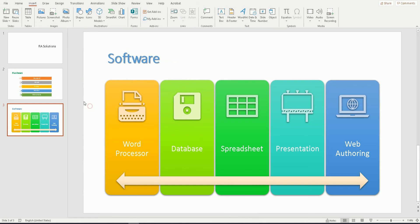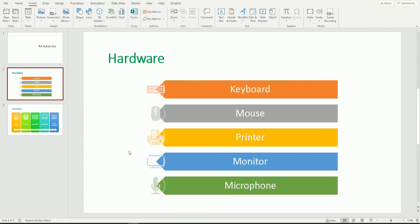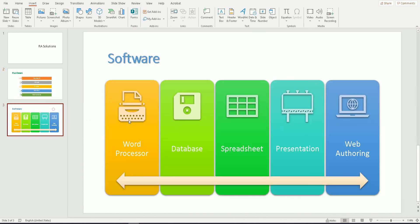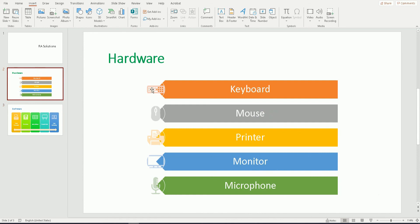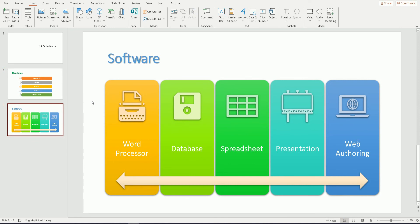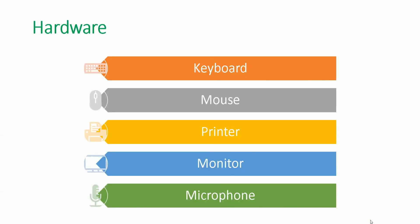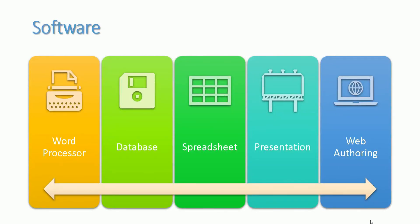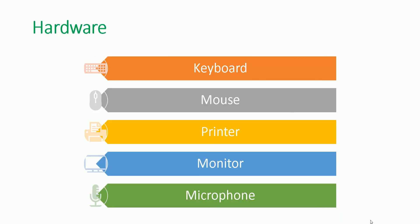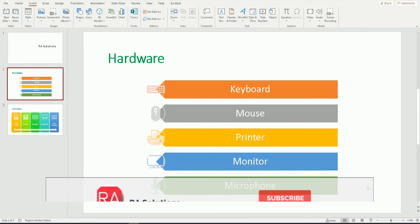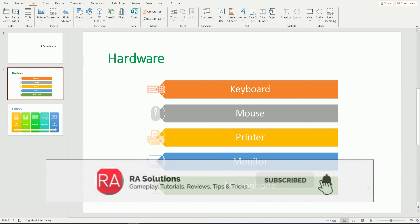So there we have it. This is a quick and easy video showing you how to convert a bullet-pointed list into SmartArt. I've shown you how to do it for two different SmartArt styles and how to add your own specific icons to customize it to your presentation topic. This makes your PowerPoint more engaging, more eye-catching, and helps capture the audience's attention. I hope this video has helped you understand how to convert simple text into SmartArt. Please like, subscribe and share. See you next time!